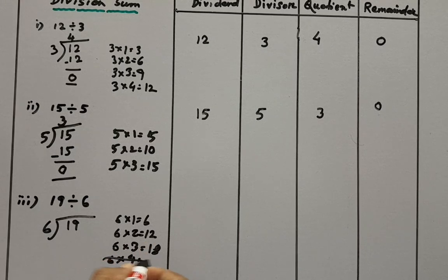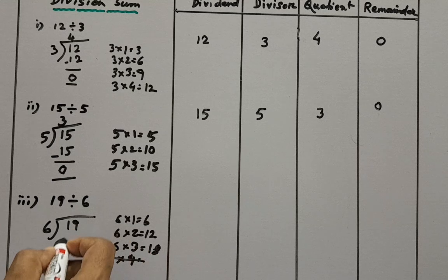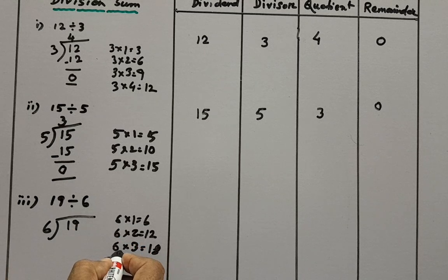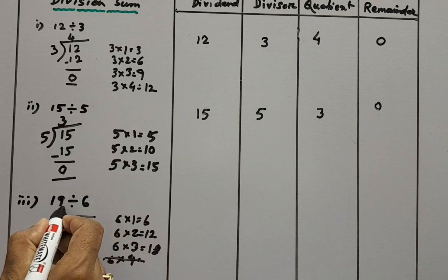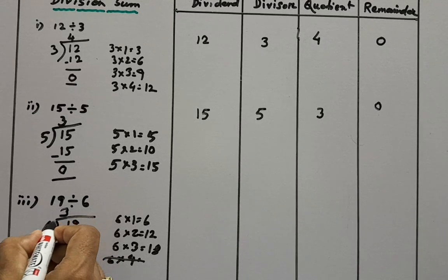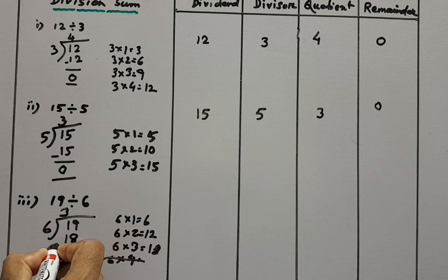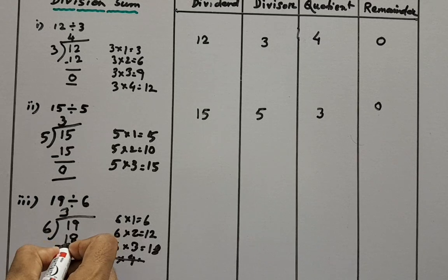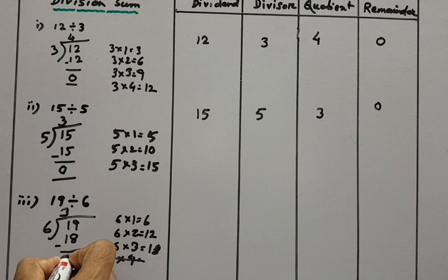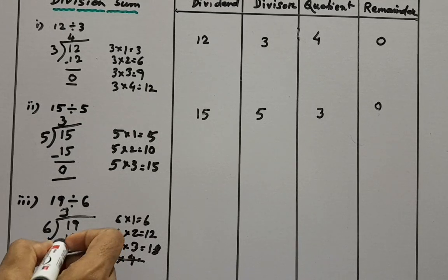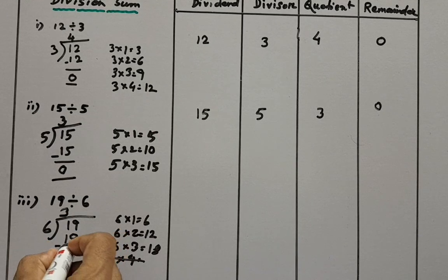So this is exceeding. So we will stop here. So 18, 3 times 6 is 18. So 3 sixes are 18. Now if we deduct 18 from 19, what will be the result? 1. So 1 is the remainder here.